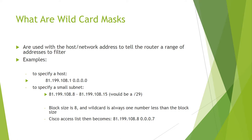For example, to specify a single host, use its IP address and subnet mask. To specify a small subnet — for example, the range 192.168.8.0 to 192.168.8.15, which is a /29 subnet — the block size is 8, and the wildcard mask is always 1 less than the block size. So the Cisco access list wildcard mask would be 0.0.0.7. Wildcard card masks and subnetting will be discussed in more detail later.